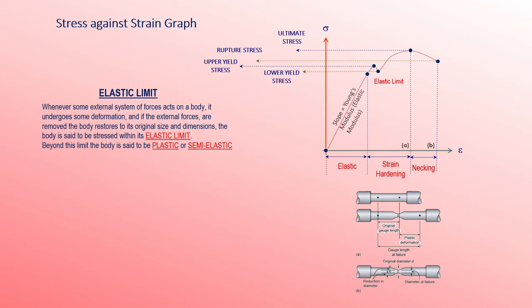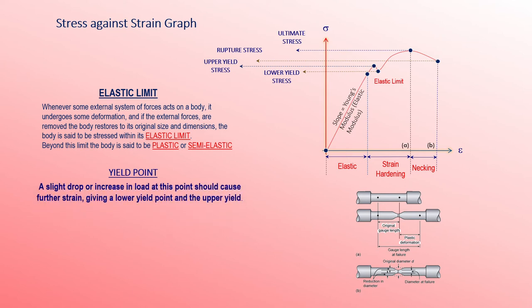Beyond the elastic limit, the body is said to be plastic or semi-elastic — this corresponds to the strain hardening region. For mild steel, the yield points are clearly defined by the curve, with a distinct upper yield point and lower yield point. A slight drop or increase in load at this point causes further strain, giving the lower and upper yield points.